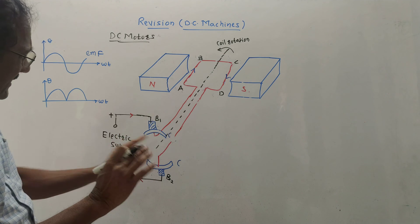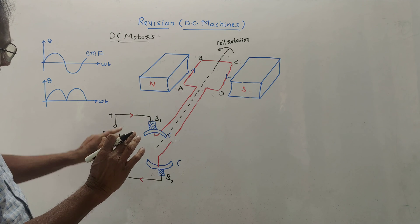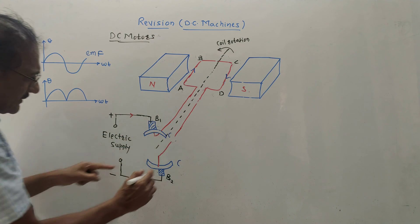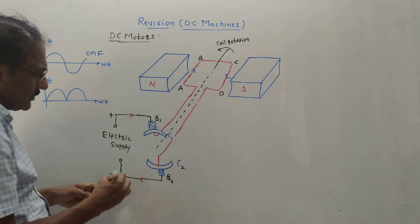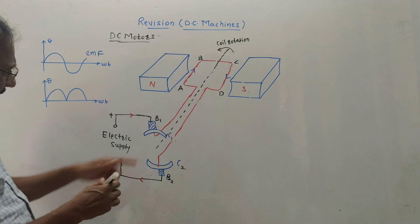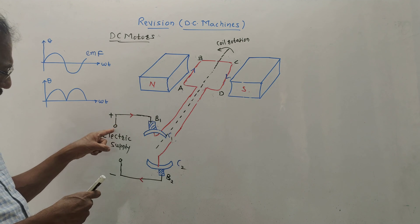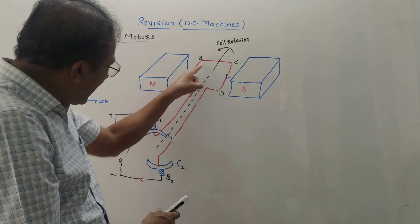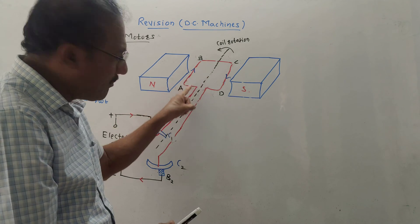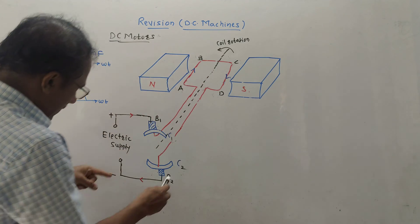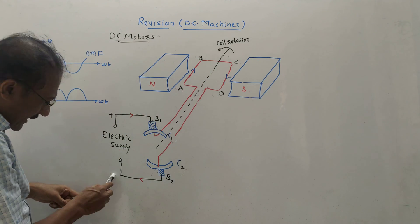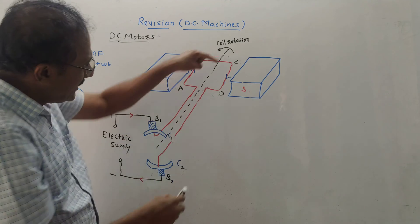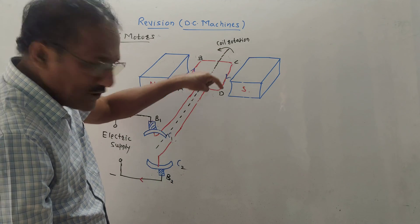About the working: brush B1 is connected to commutator C1, and brush B1 is connected to the positive supply of electricity. So through the coil AB, the current is flowing from A to B. B2 is connected to negative supply, so through the segment CD, the current is flowing from C to D.